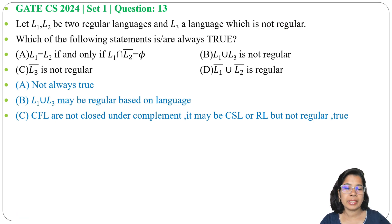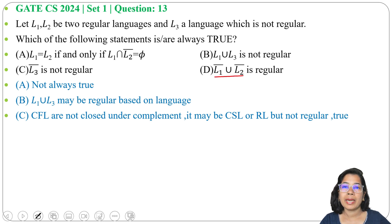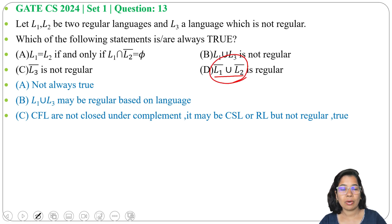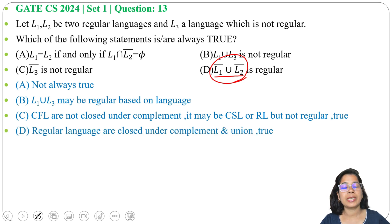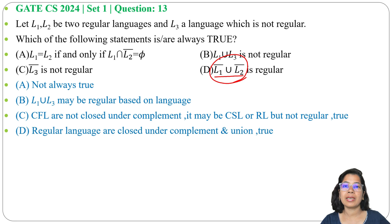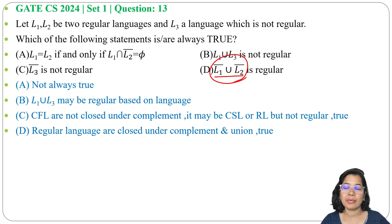Option D: L1 complement union L2 complement is regular. L1 and L2 are both regular languages, and regular languages are closed under complement and union. So their union is also regular — Option D is true. Therefore, Options C and D are true based on closure properties, whereas Options A and B depend on the specific language and are false.